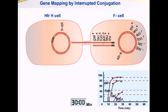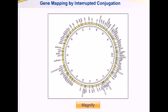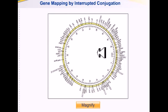By repeating this experiment using other marker genes, it is possible to map the entire bacterial genome. By repeating this procedure using different HFR strains and different F-factor integration sites, the location of all genes in E. coli have been mapped. This map shows selected genes divided into 100 minutes, because that is how long it takes to transfer the entire genome to the recipient cell.